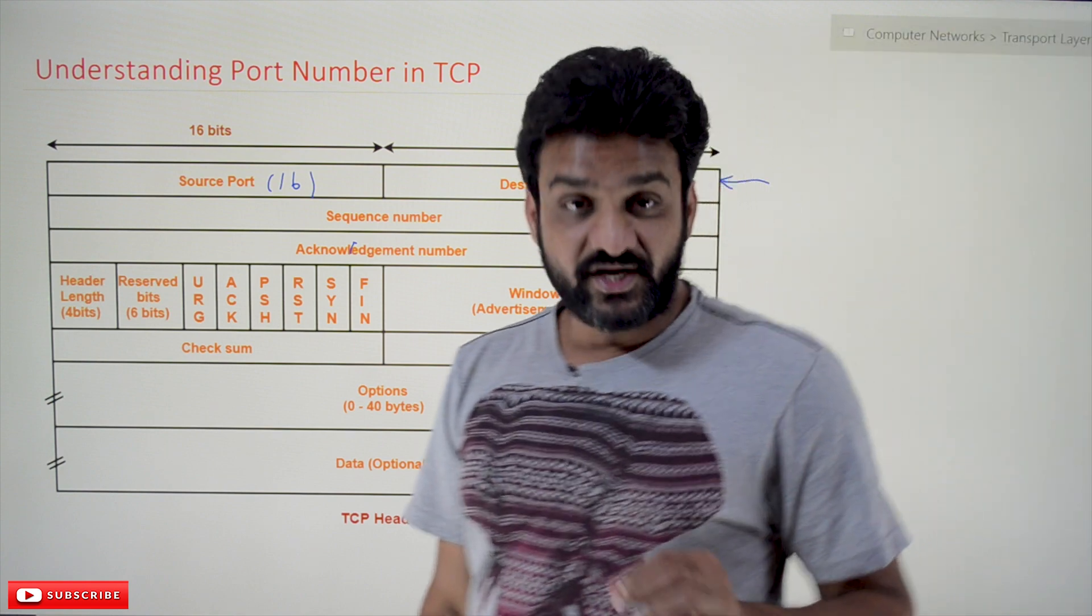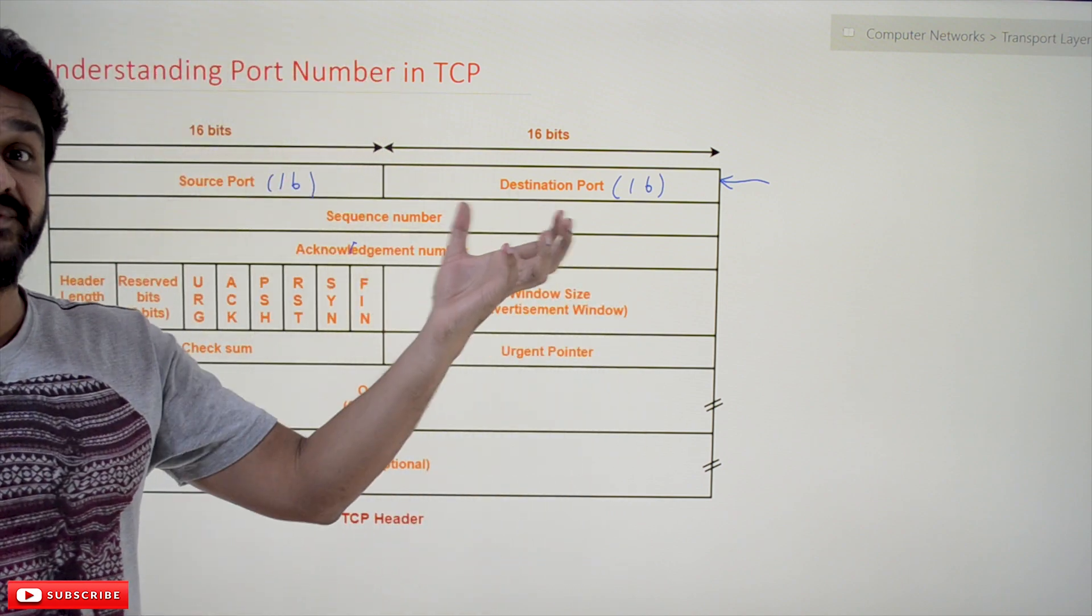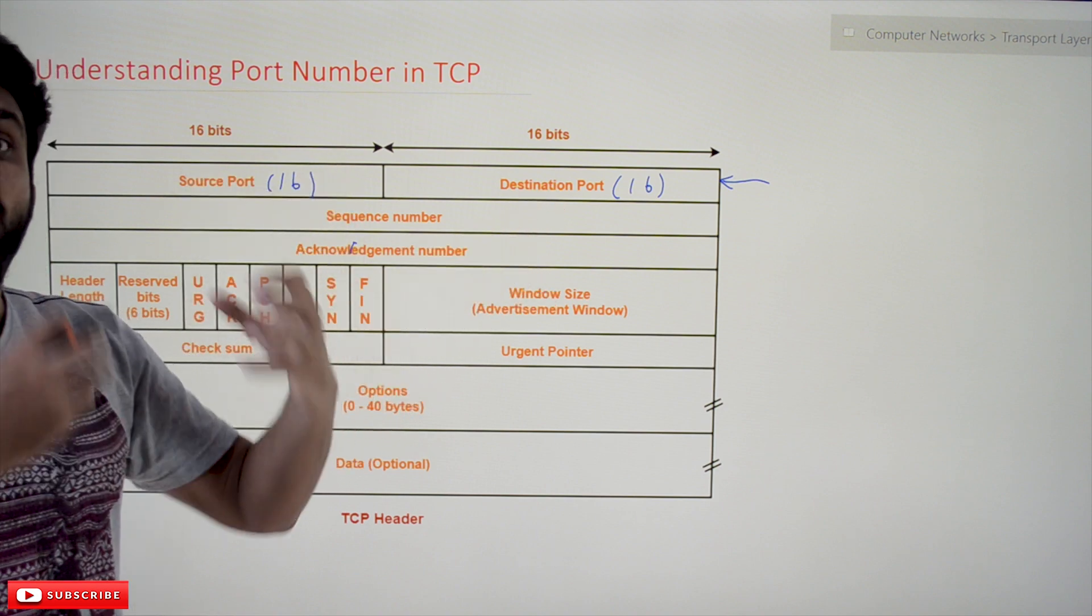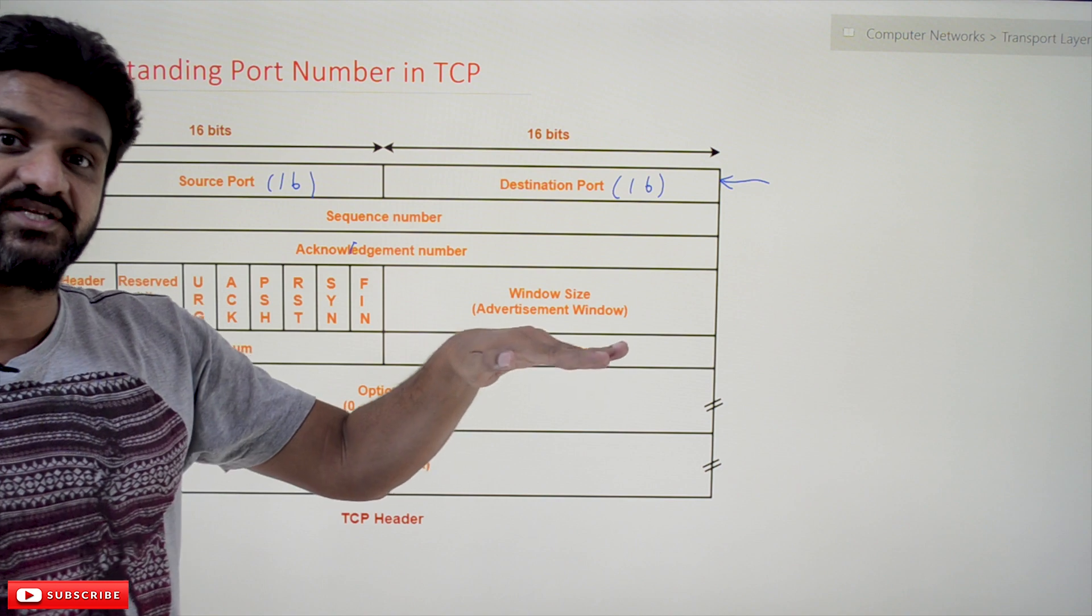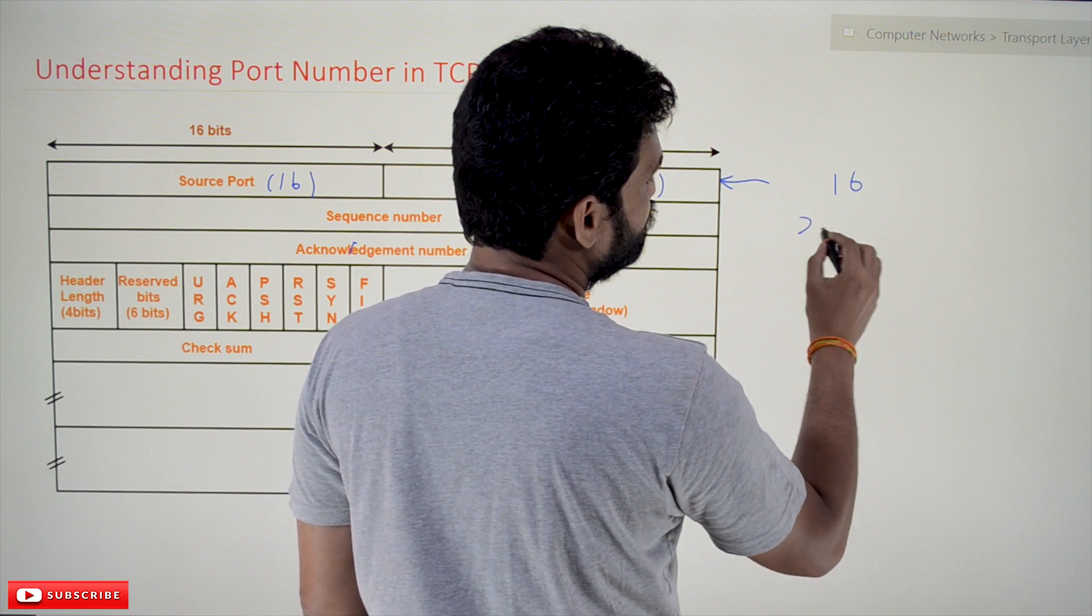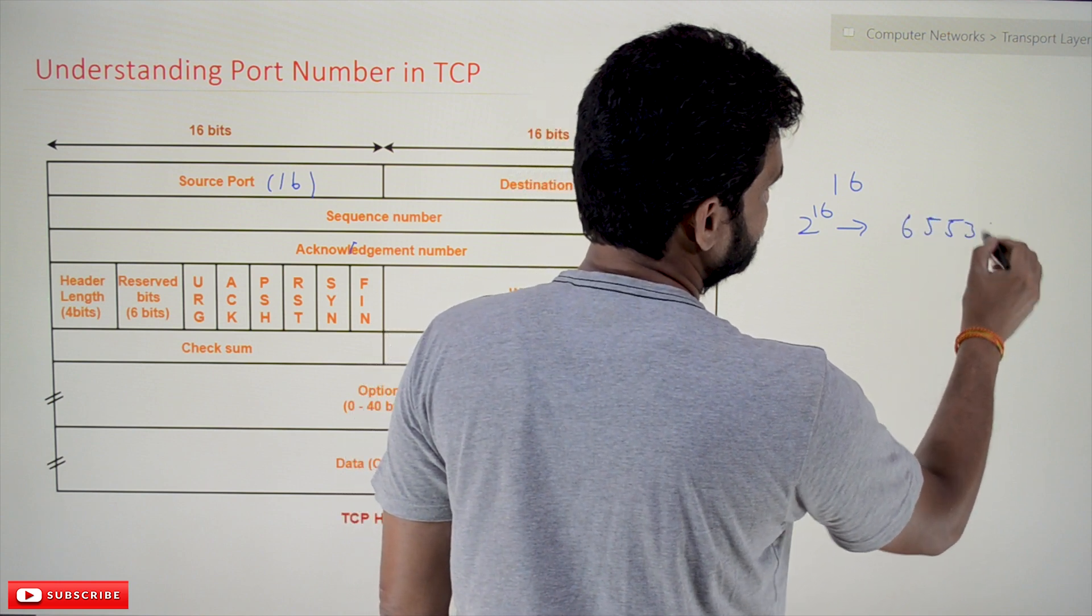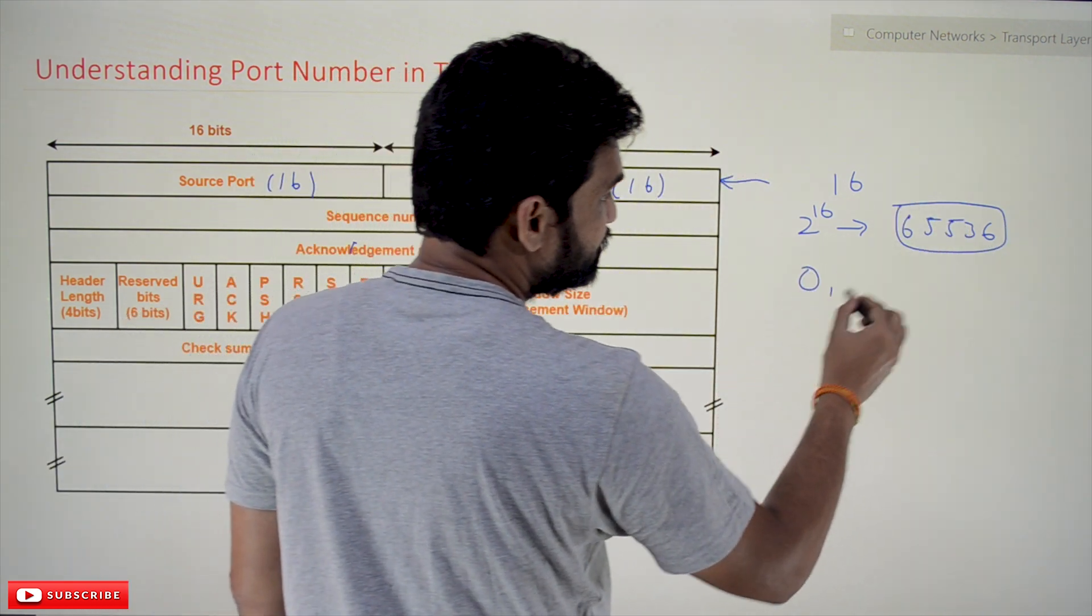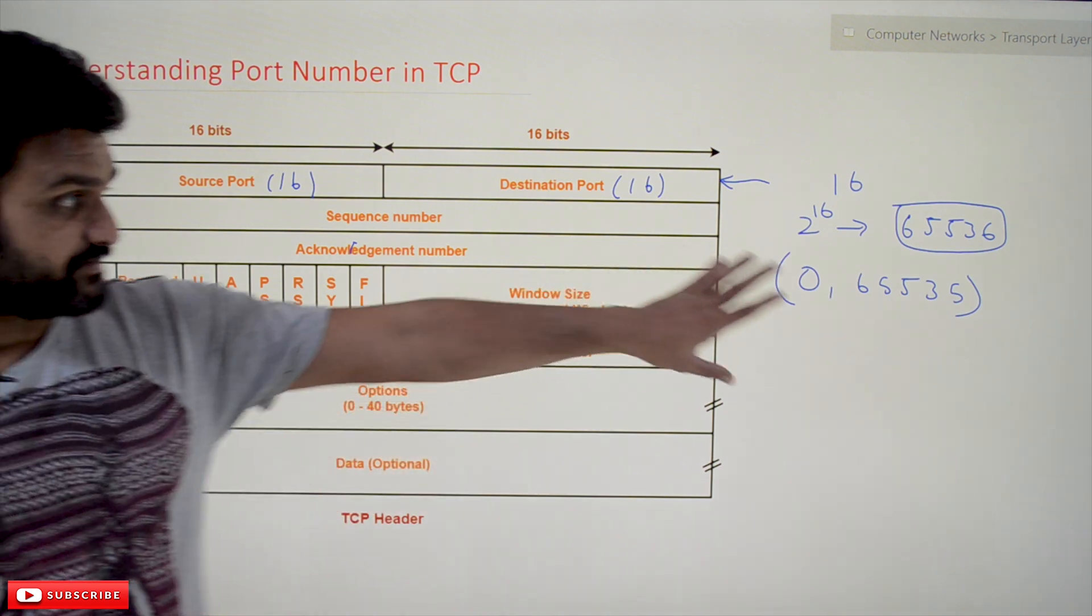Now, what are the number of port numbers that can be generated with 16 bits? How many port numbers can be generated? There are three different classifications in the port numbers. With 16 bits we can generate 2 power 16 numbers, which means 65536. The range of those numbers is from 0 to 65535. These are the range of numbers that are possible for port numbers, whether for source port or destination port.